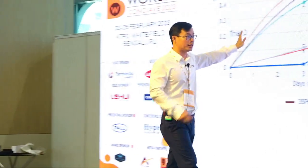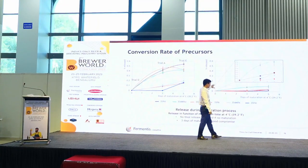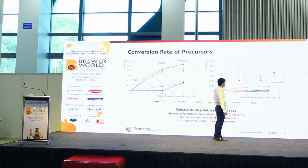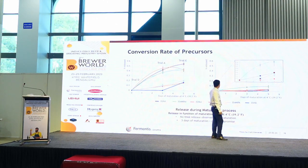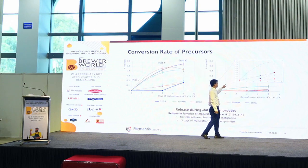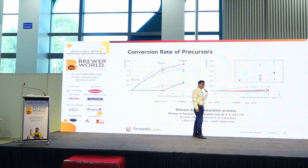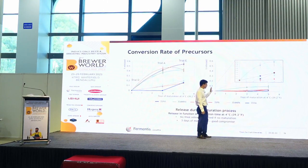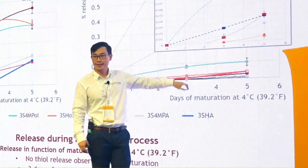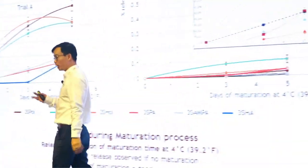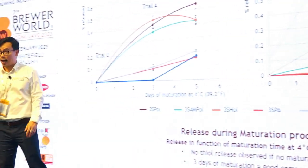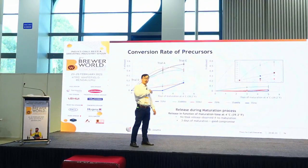That was for the cysteine-bound precursor — 16S. For the second, glutathione-bound precursor, which is harder to release: if we magnify the data, a quite similar result is seen. No thiol release during main fermentation — only during maturation, stronger after two to three days. If you want more thiols, you need adequate maturation time.